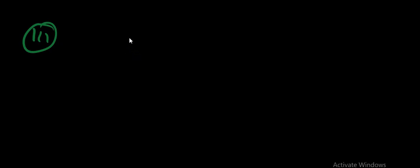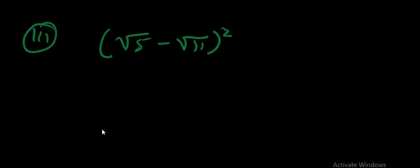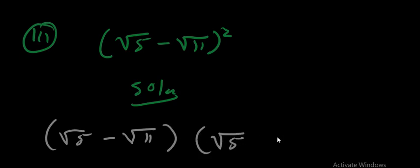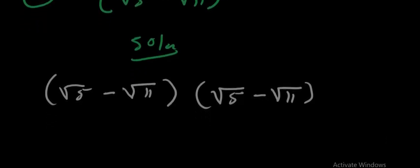The next example is (√5 − √11)². The solution is straightforward — we approach it the same way as before. This is the same as (√5 − √11)(√5 − √11), multiplying the expression by itself.